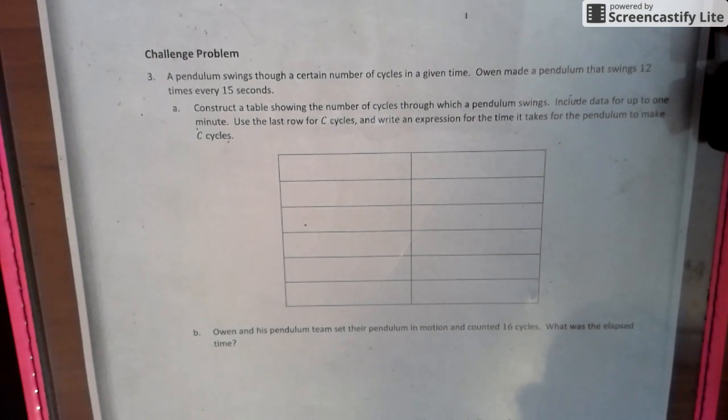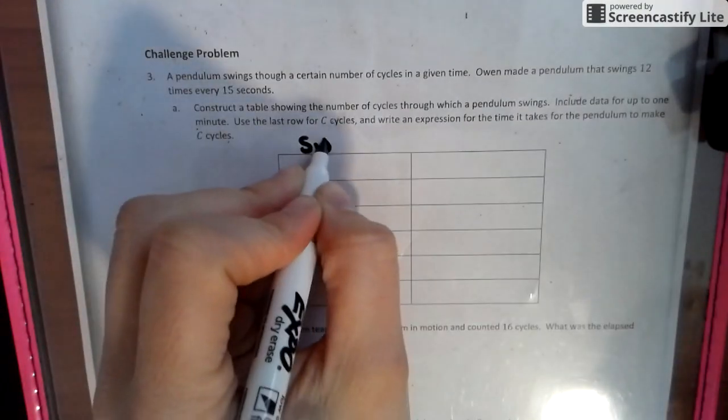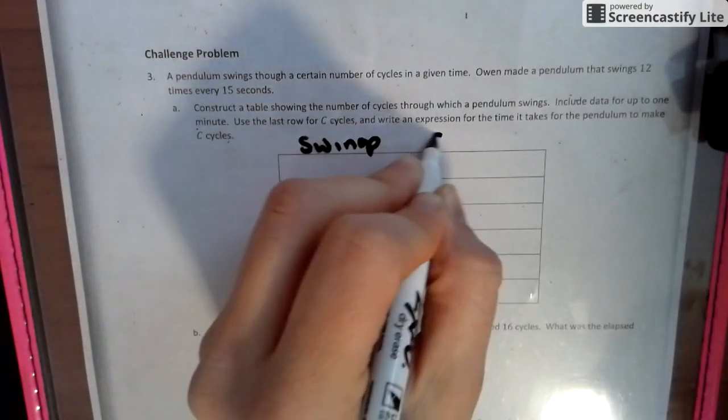We're going to construct a table showing the number of cycles through which a pendulum swings. Include data for up to one minute, use the last row C cycles and write an expression so we can find out what that would be. All right. So we have swings and seconds.